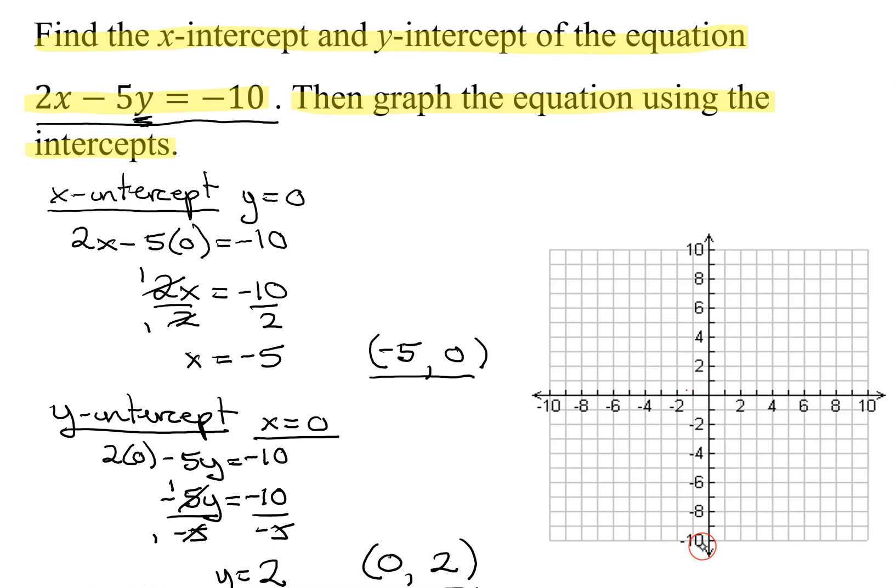So if I go over to my graph, let's graph the x-intercept first. Start at the origin. Negative 5, 0 means I go 5 to the left and nowhere in the y direction. So there is negative 5, 0 on the x-axis.